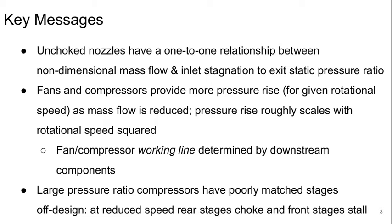The key messages to take away from today's lecture are that unchoked nozzles have a one-to-one relationship between the non-dimensional mass flow and the inlet stagnation to exit static pressure ratio. Fans and compressors provide more pressure rise for a given rotational speed as you reduce the mass flow entering them, and the pressure rise roughly scales with the rotational speed squared.